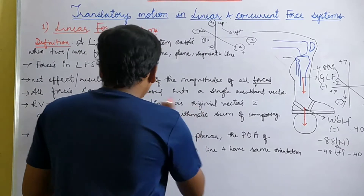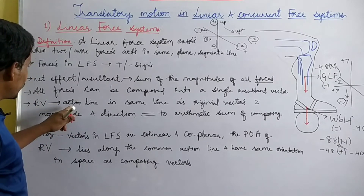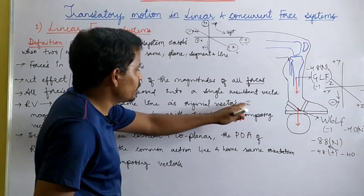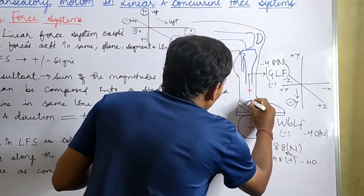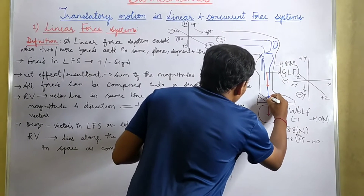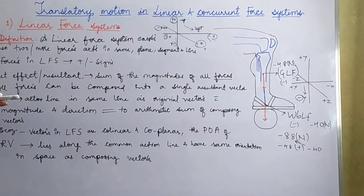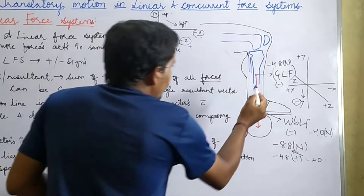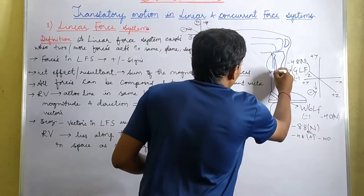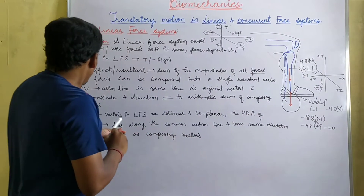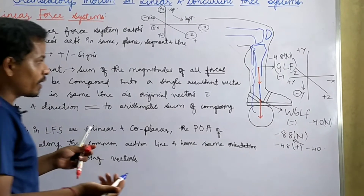Before moving on, I'll explain the action line. The resultant vector of a linear force system will have its action line in the same line as that of the original vectors. For example, extending the line — the dotted part — this becomes an action line. All forces can be composed into a single resultant vector; for example, gravity on the leg-foot and weight boot on the leg-foot can be composed into a single resultant vector with the same action line as the original vectors.